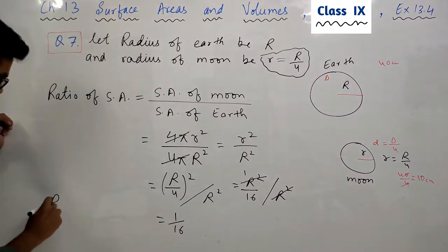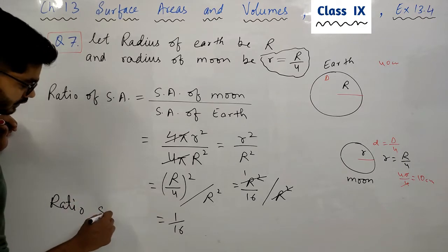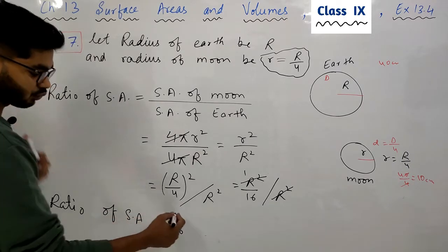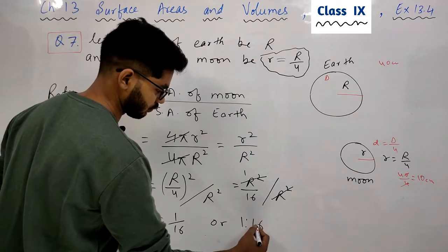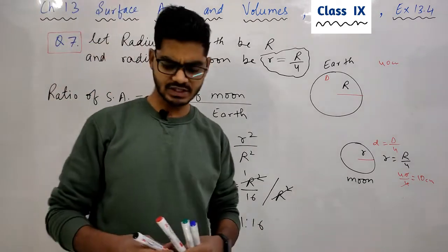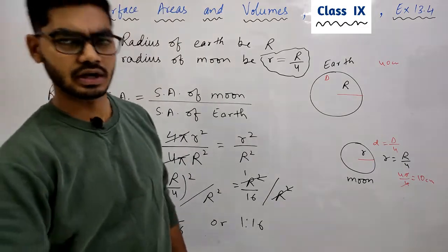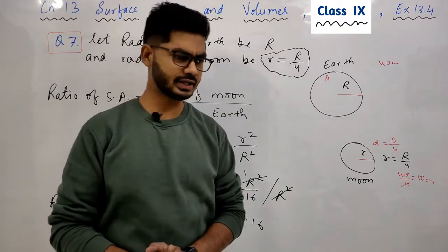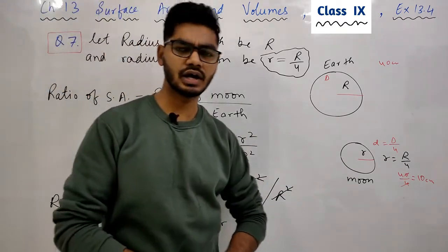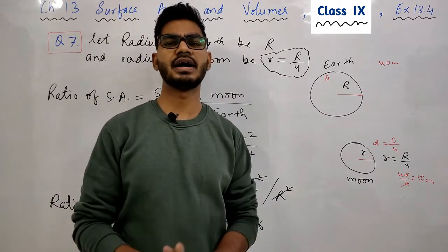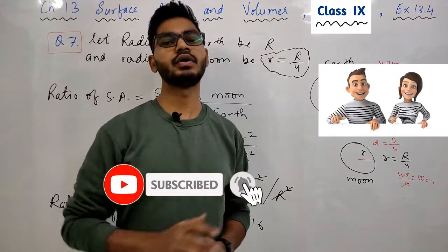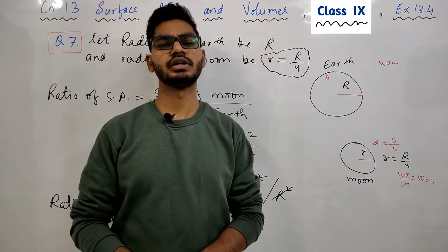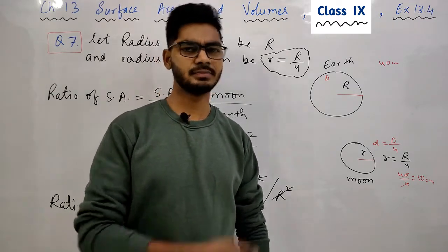So this is the ratio of surface areas — ratio of surface areas is 1:16. I hope समझ में आ गया होगा कि किस तरीके से question करना है। यहाँ diameter की वजह से confusion हो सकती थी, लेकिन इस तरीके से करने पर clear हो जाता है। अगर समझ में आया है तो video को like करके channel को subscribe कर लीजिए, bell icon hit कीजिए। अपने friends के साथ भी share करना मत भूलिए। मिलते हैं next video में एक नए question के साथ — please note it down.